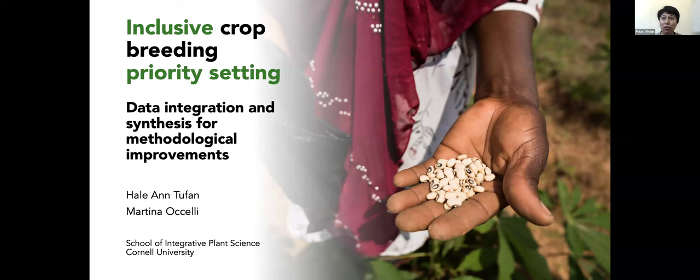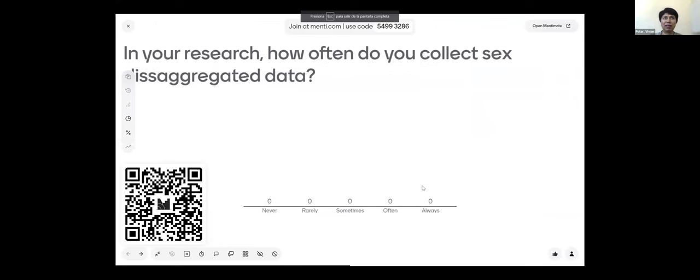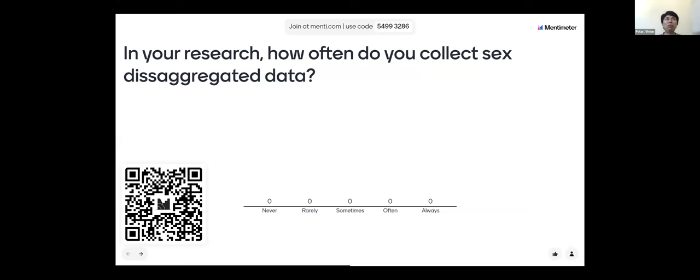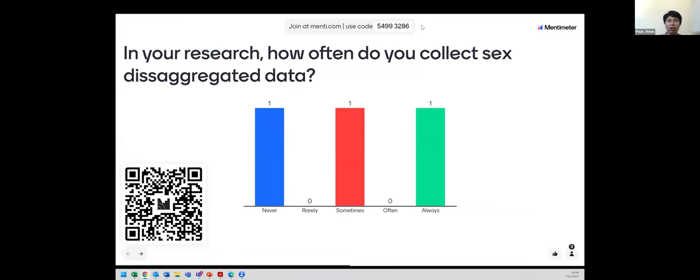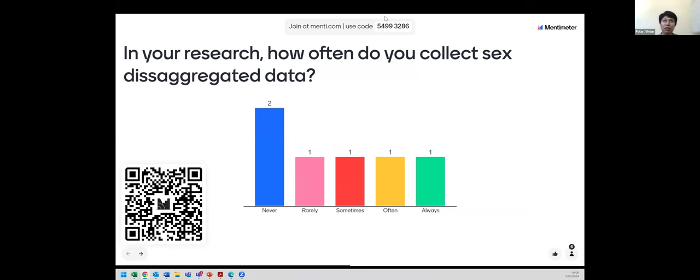We're going to go into a very brief icebreaker. We want to know who's on the team here and what you've done. I see there are about 115 people here, still growing. So we want to know: in your research, how often do you collect sex-disaggregated data? Please use the QR code on the top, or you can use the menti code — join menti.com and type in 549-3286 — and let us know how often do you collect sex-disaggregated data.